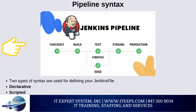Two types of syntax are used for defining your Jenkinsfile: Declarative and Scripted. Declarative pipeline syntax offers a simple way to create pipelines. It consists of a predefined hierarchy and provides the ability to control all aspects of a pipeline execution in a simple, straightforward manner. Scripted Jenkins pipeline syntax runs on the Jenkins master with the help of a lightweight executor, using very few resources to convert the pipeline into atomic commands. Both scripted and declarative syntax are defined totally differently from each other.